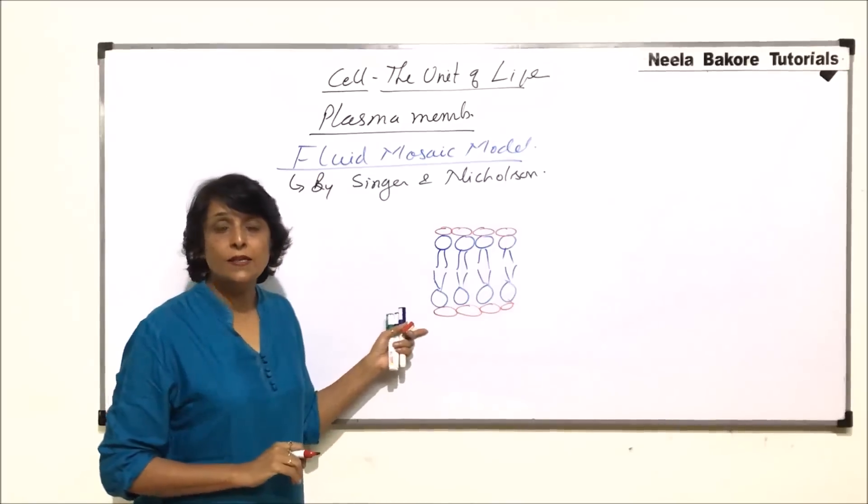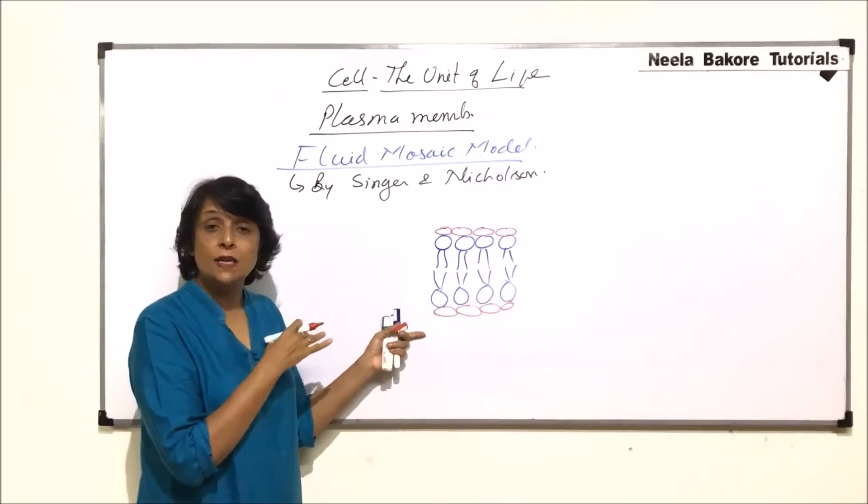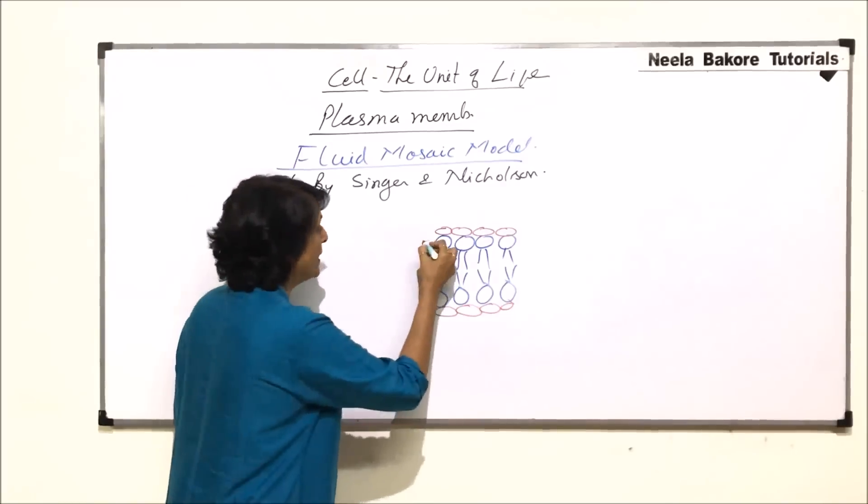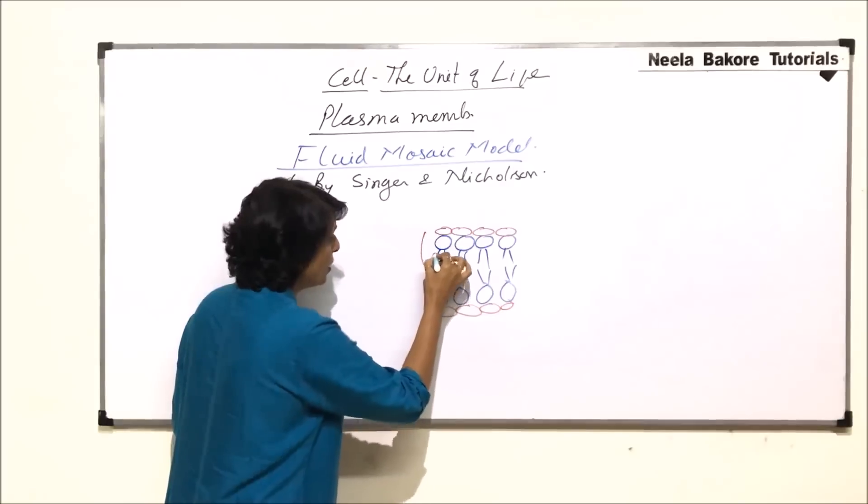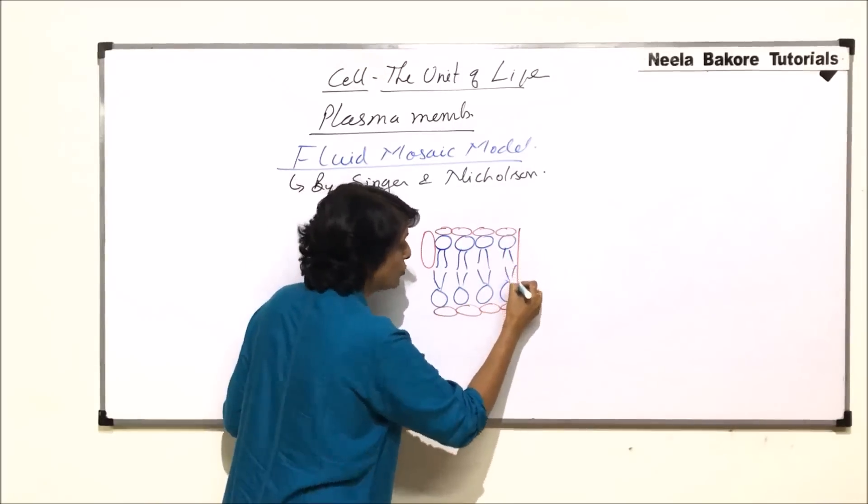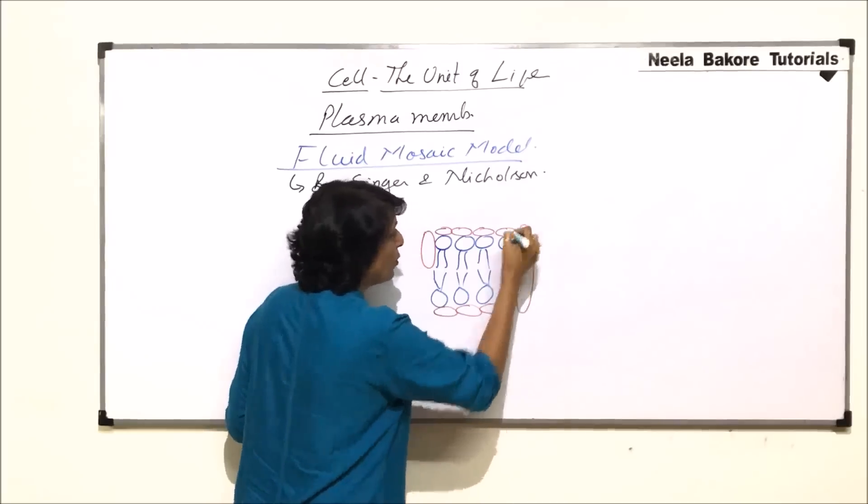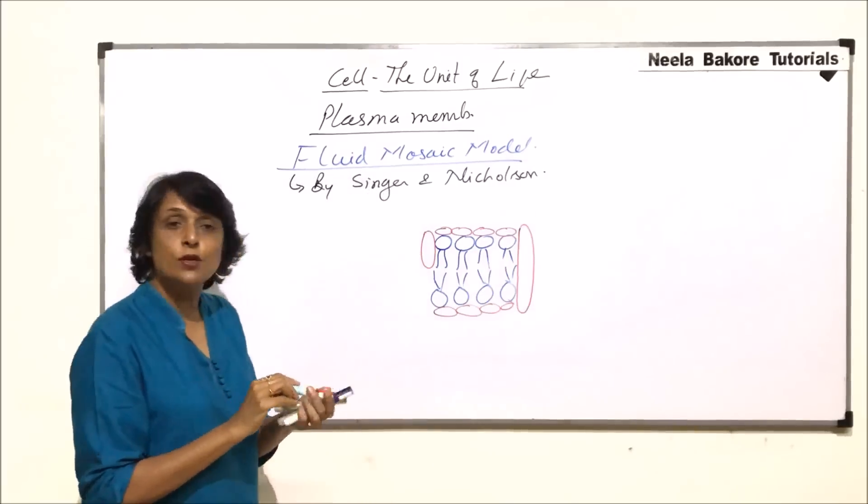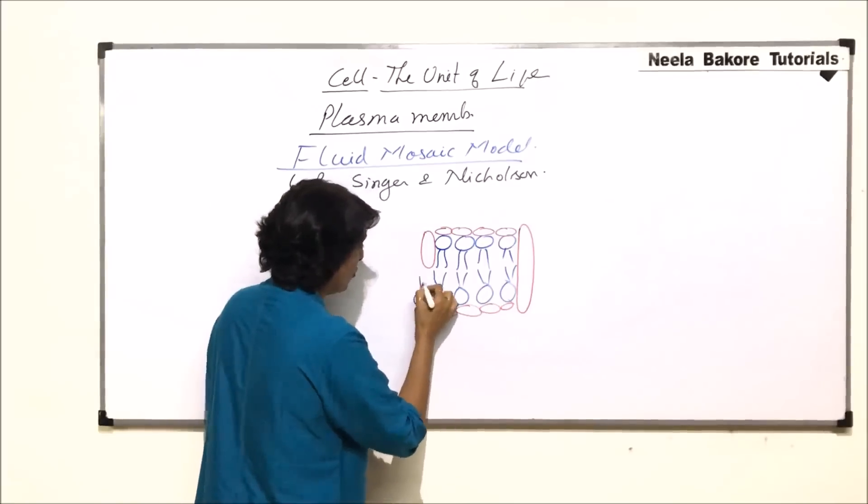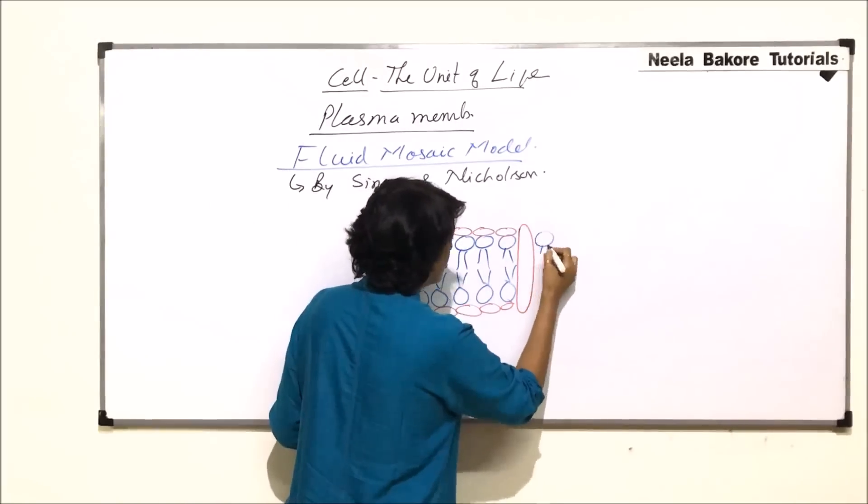Intrinsic proteins, as mentioned by Singer and Nicholson, are partially or completely embedded. Partially means the protein is partially embedded, or if we have to show the completely embedded protein then this is how it is going to be. Let us extend this membrane a little more.